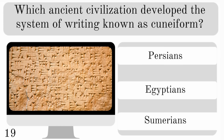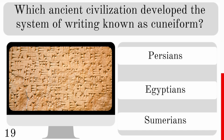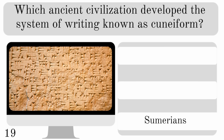Which ancient civilisation developed the system of writing known as cuneiform? Was it the Persians, Egyptians or Sumerians? And it was the Sumerians.